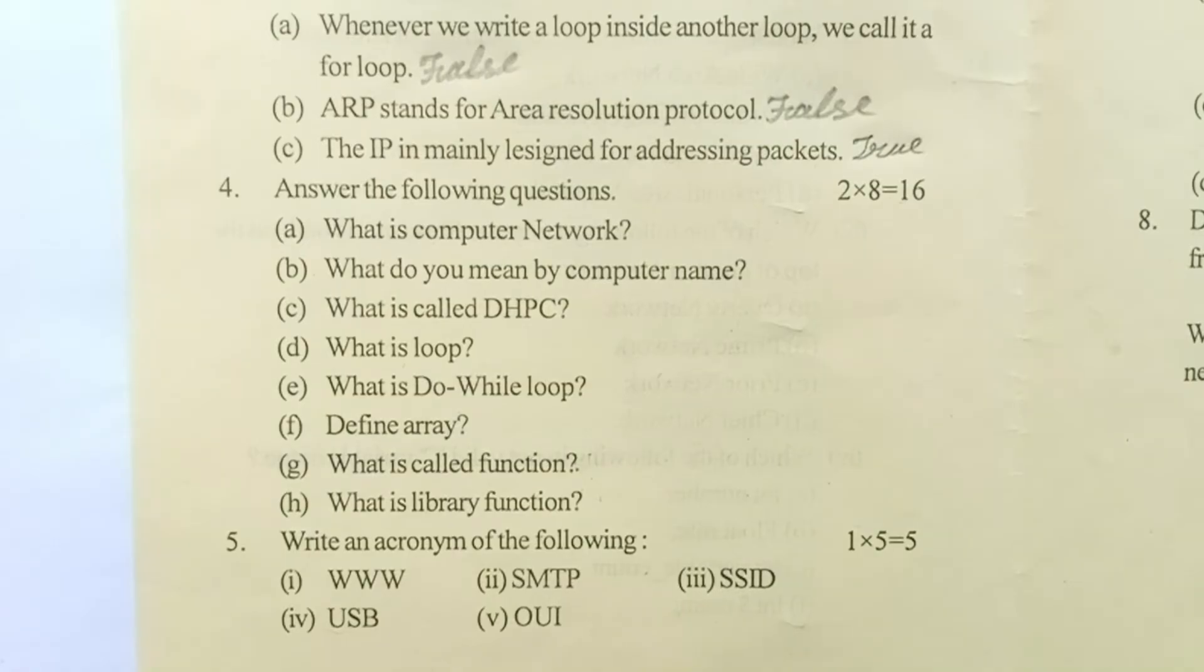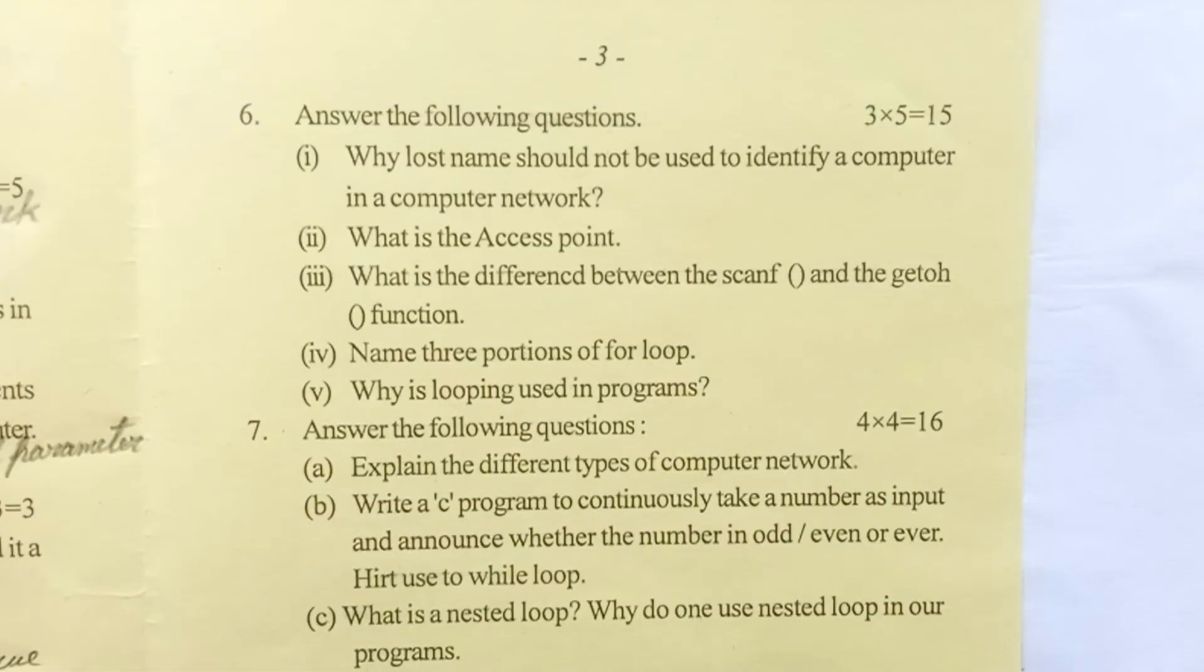Number one: WWW. Number two: SMTP. Number three: SSID. Number four: USB. And number five: OUI. Question number six: answer the following questions. This question carries 3 into 5 equal 15 marks.